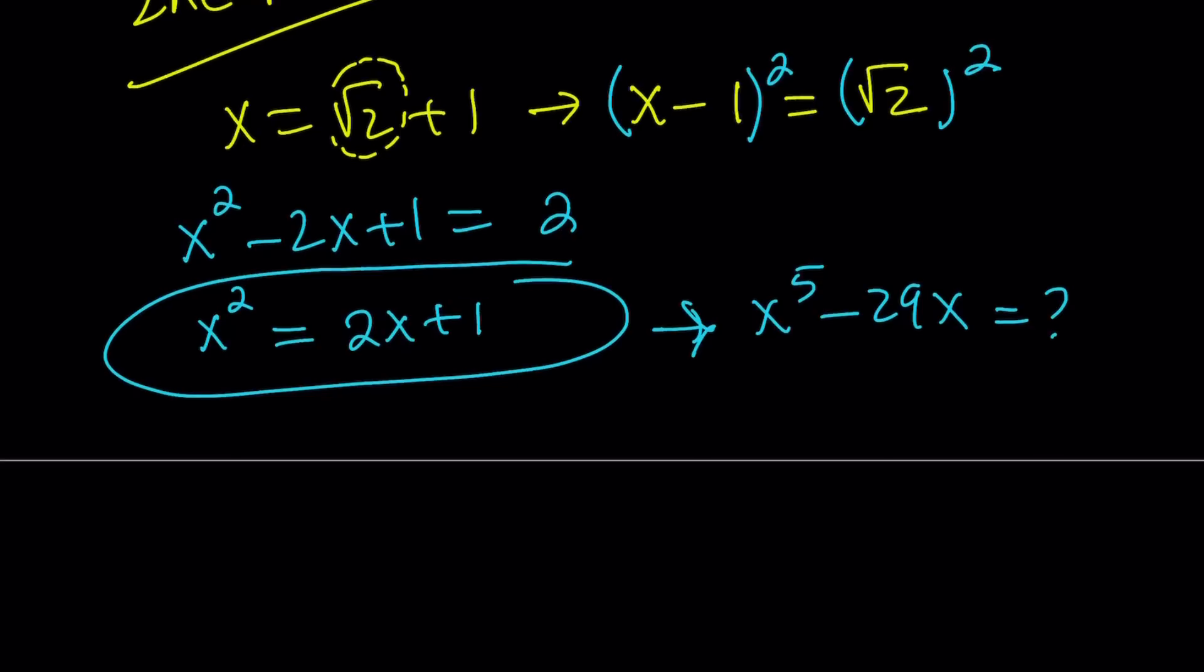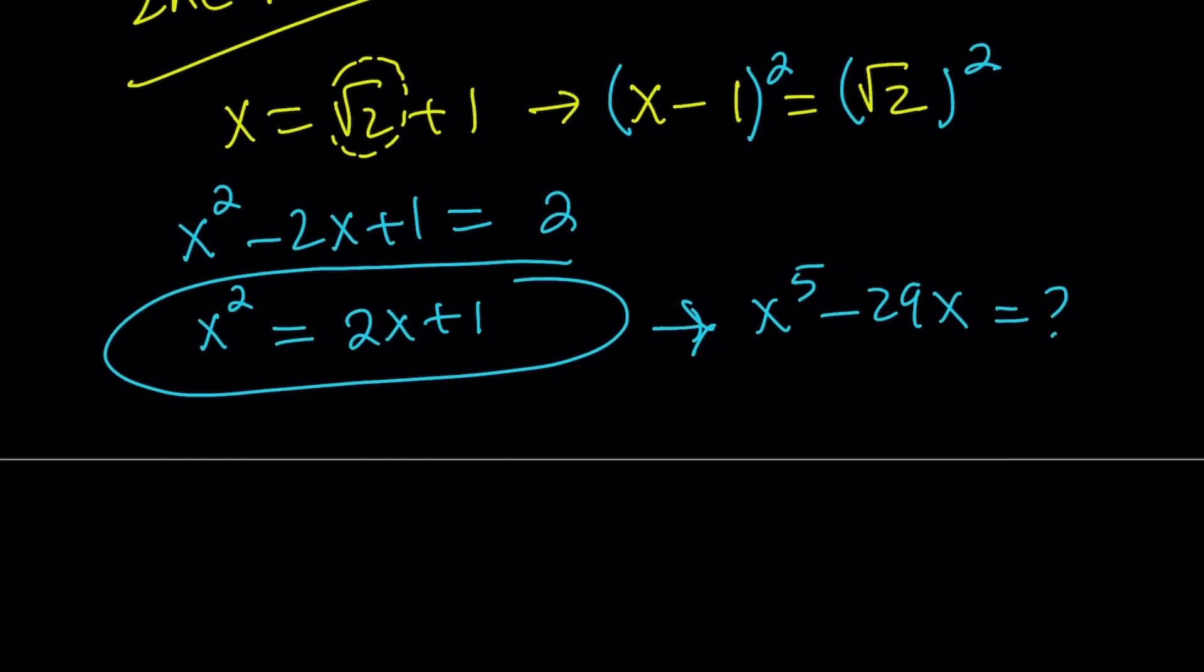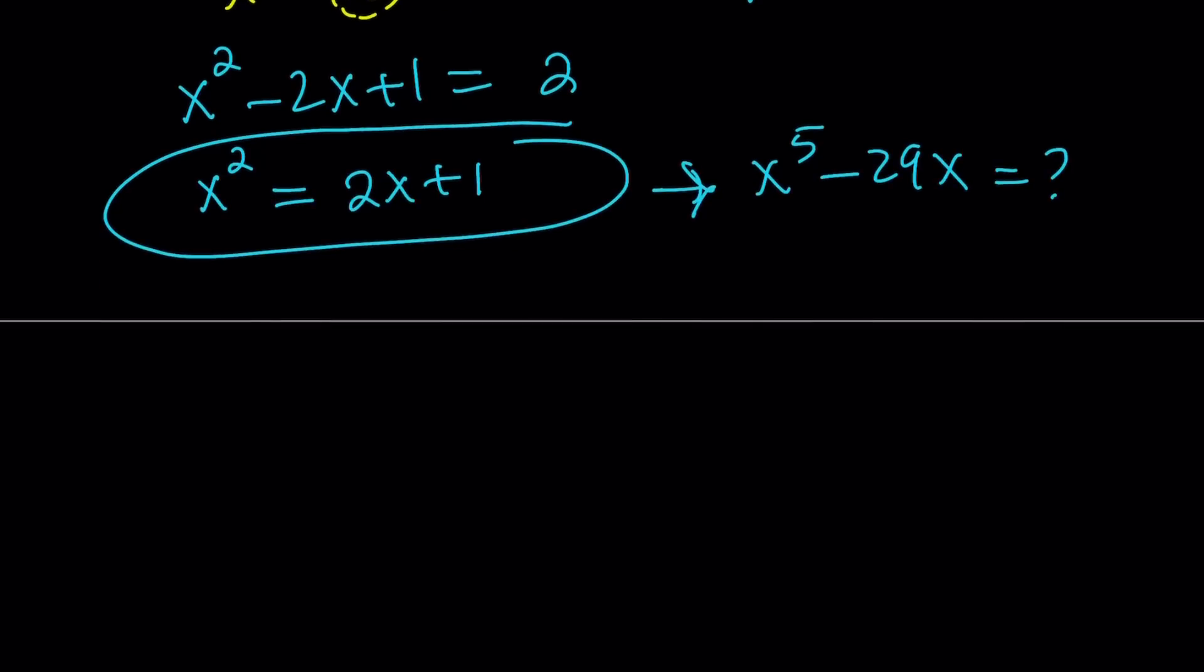So, I have x to the second power, and I do need to get to the fifth power. So why not just keep expanding this? For example, I can evaluate x^3 from here, which is x^2 times x. But x^2 is given as 2x + 1. Just multiply by x.